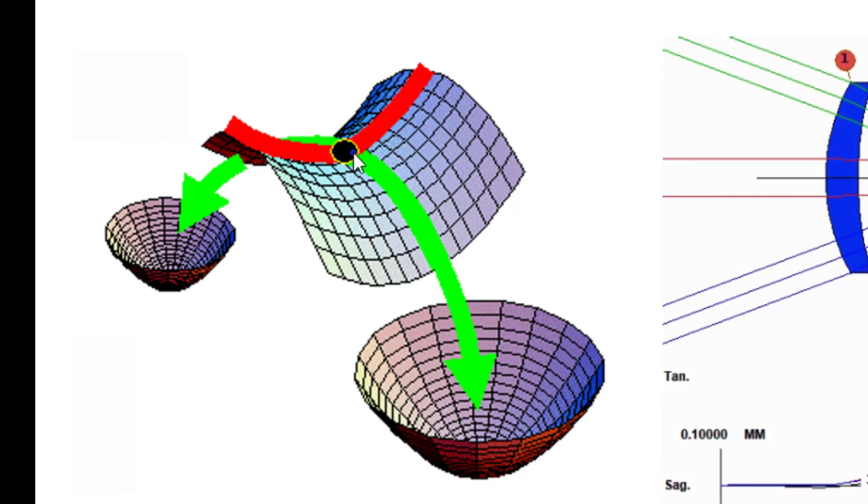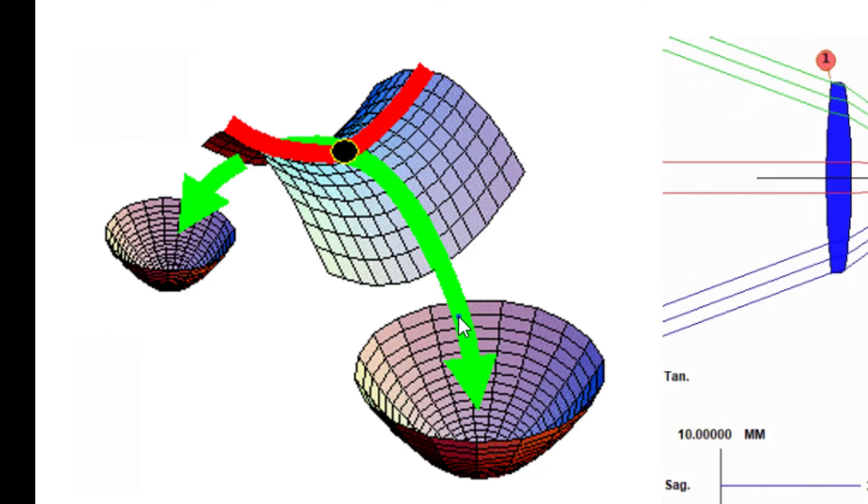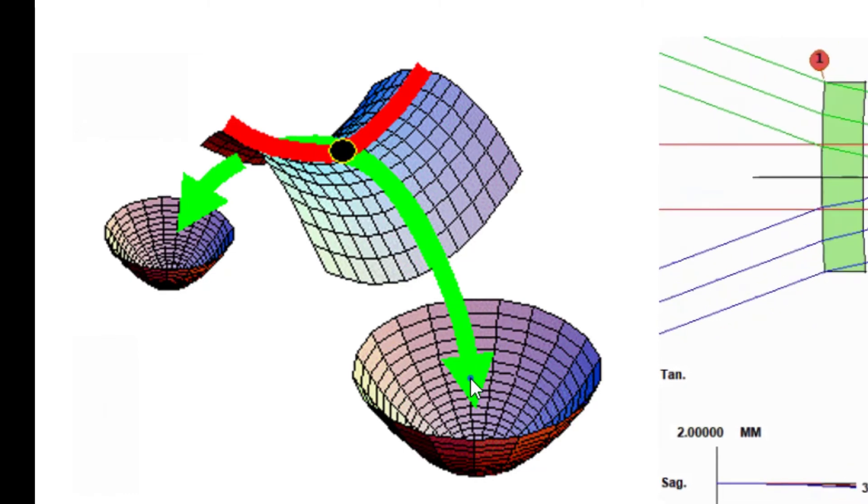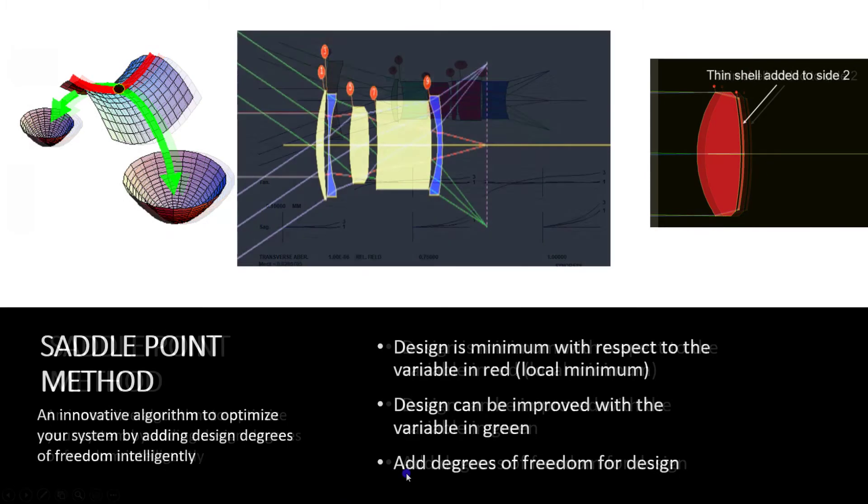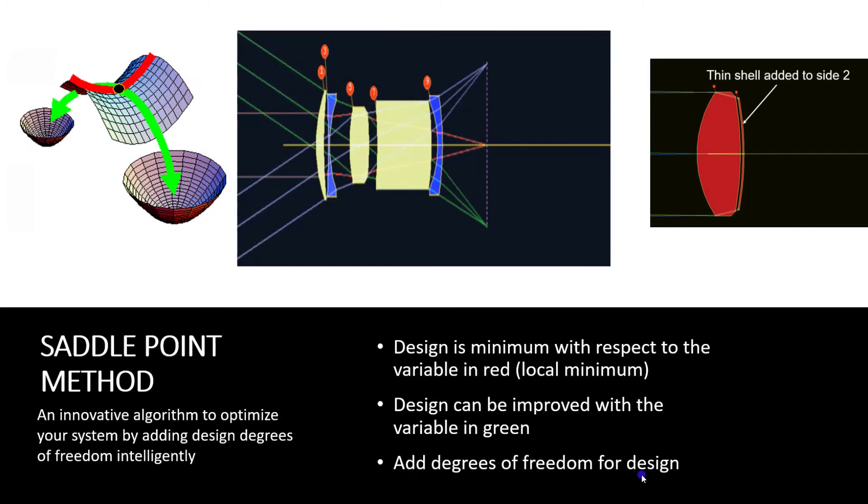However, what if you can go down this green line and get to this lower minimum and thus get a better design? But how can you go from this red line to this green line? One method is to add degrees of freedom for your design.